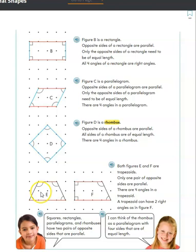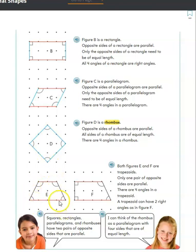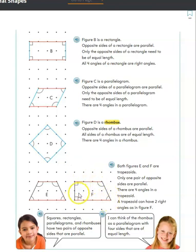Our last quadrilateral is called a trapezoid. In a trapezoid, only one pair of opposite sides needs to be parallel. Look at figure E — these two red lines are parallel, but the other two are not; if those two were to keep going, they would eventually meet. So at least one pair of opposite sides has to be parallel in a trapezoid. There are also four angles. A trapezoid can have two right angles, but it doesn't always have to — this one doesn't have any, but this one does have two right angles.